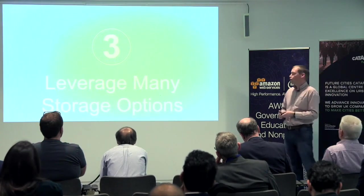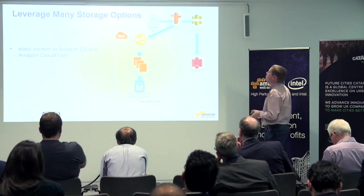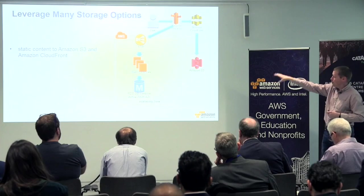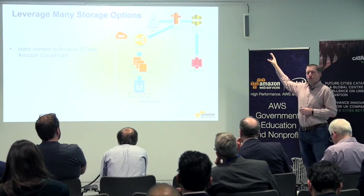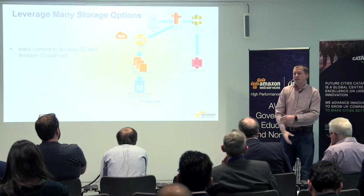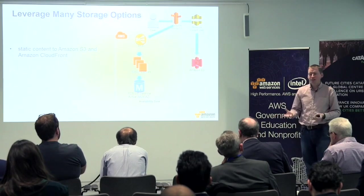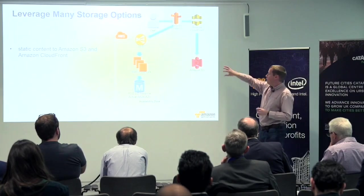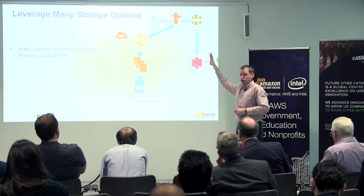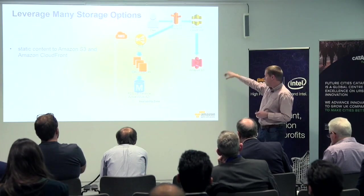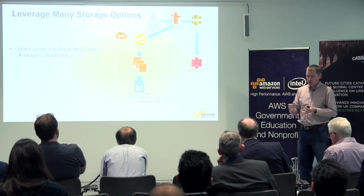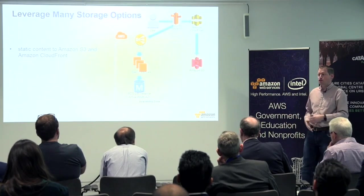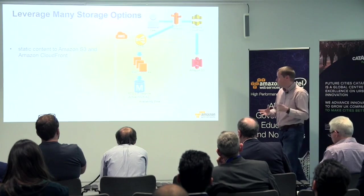Number three, leverage many storage options. Within AWS we have a range of services. CloudFront is our content distribution network — it gives you the ability to offload caching of static or infrequently used data into our edge locations, so as you scale, those requests are served by CloudFront and don't impact your core infrastructure. You can then use our object storage called S3, which allows you to put a huge number of objects in a very durable, scalable fashion at a very low cost.